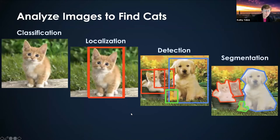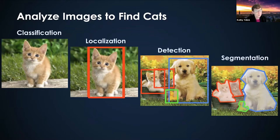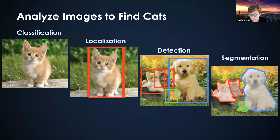To start with some examples of analysis: there's the canonical example of finding cats on the internet. We can use this for classifying whether an image contains a cat, localizing where the cat is in the image, detecting other sorts of things that are similar to cats but not exactly, and segmenting exactly what the outline of an object is in any particular image.